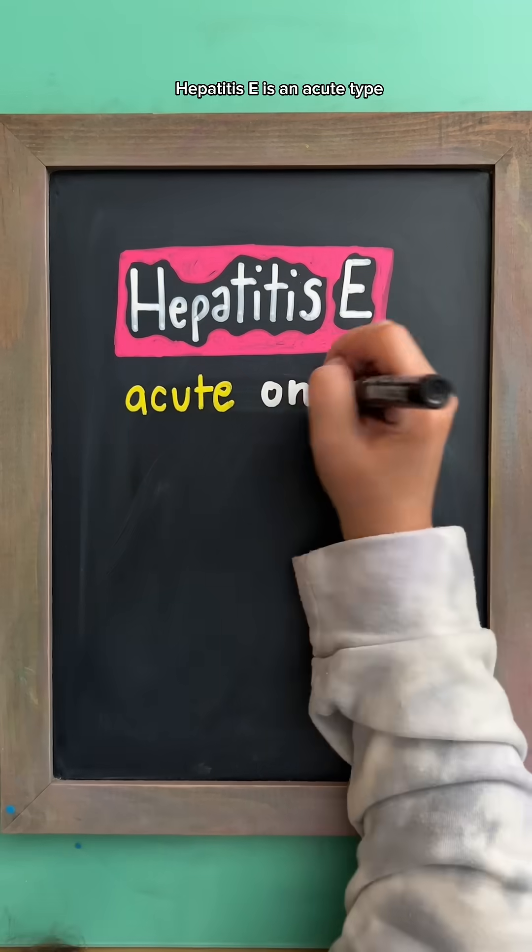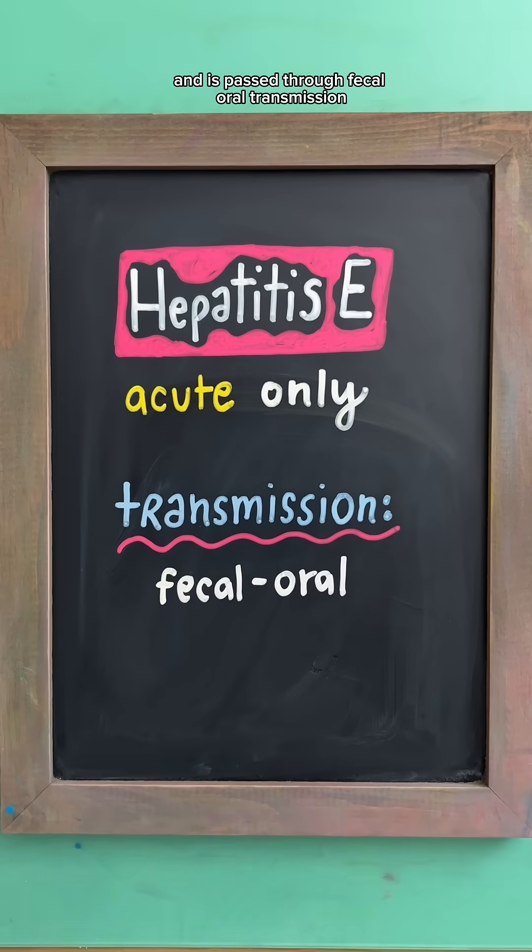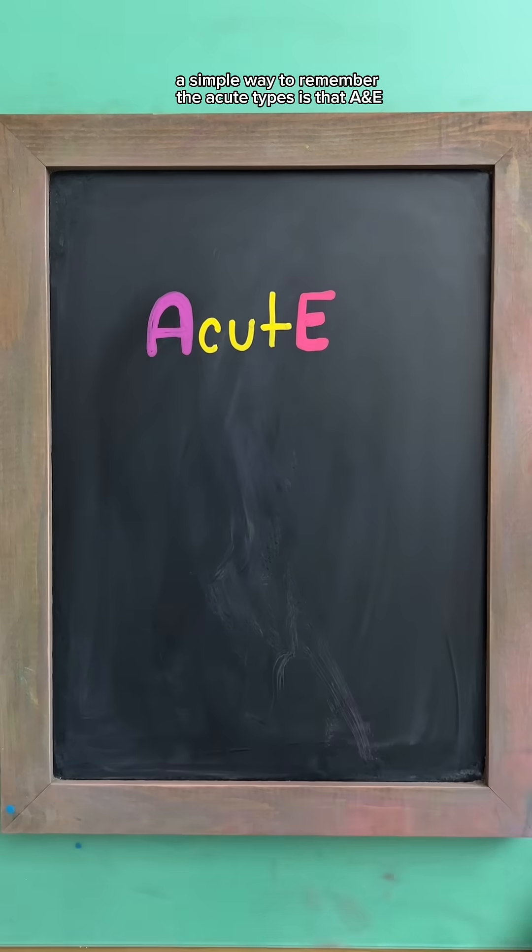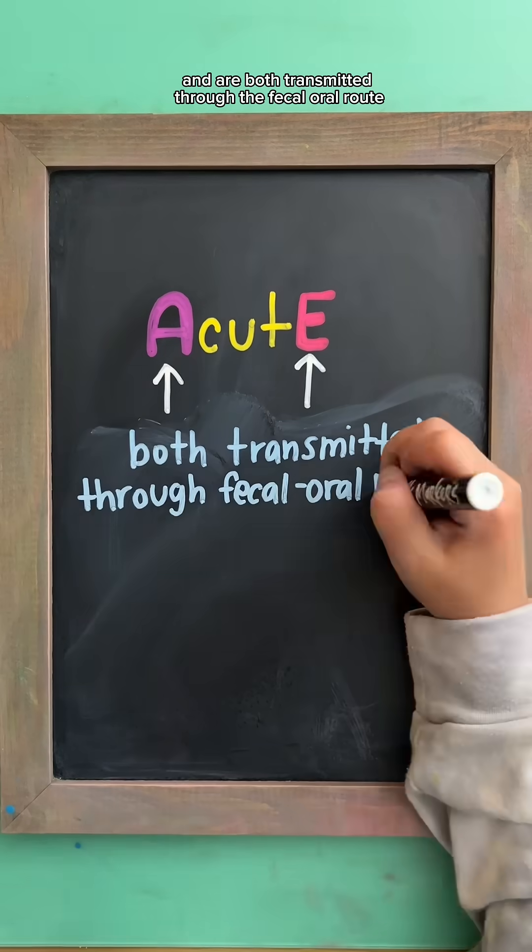Hepatitis E is an acute type and is passed through fecal-oral transmission. It's the most common type prevalent in third world countries. A simple way to remember the acute types is that A and E are in the word acute and are both transmitted through the fecal-oral route.